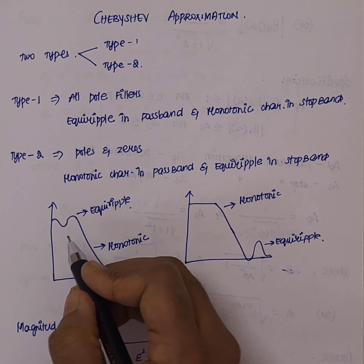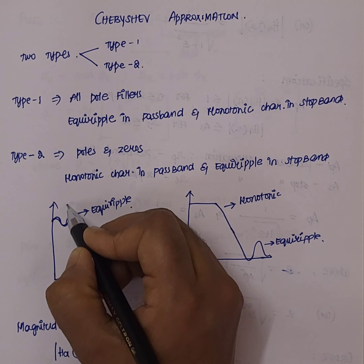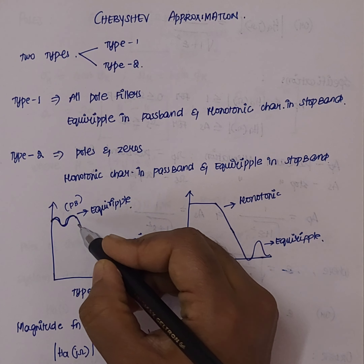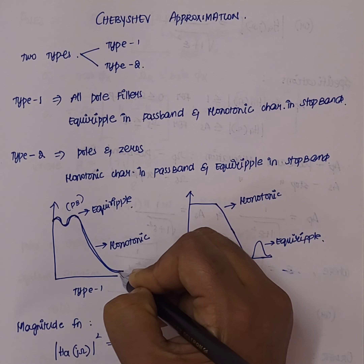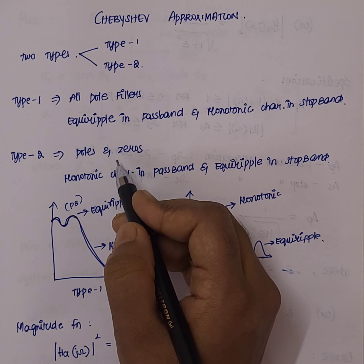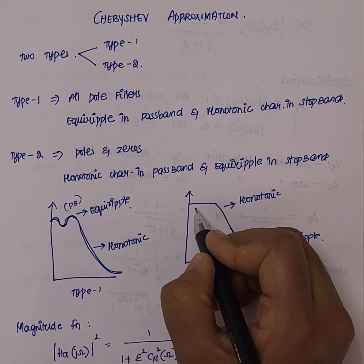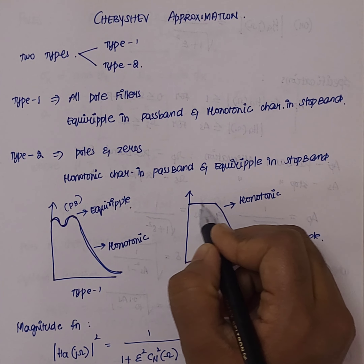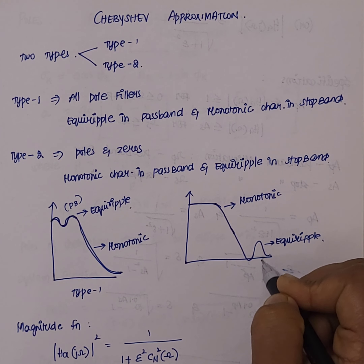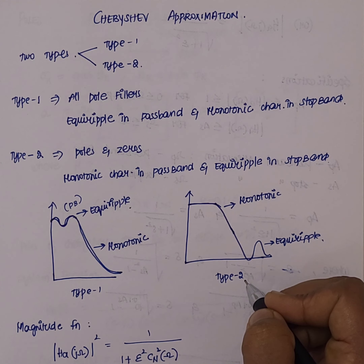If you look at the diagram, the equal ripple is in the pass band for Type 1, and the monotonic characteristic is in the stop band. Type 2 is the opposite — it has poles and zeros, with monotonic characteristics in the pass band and equal ripple in the stop band. This is the major difference between Type 1 and Type 2.